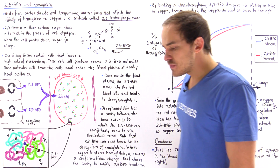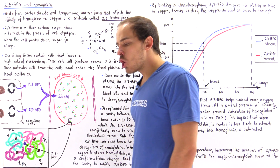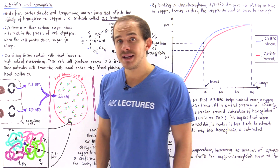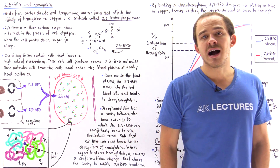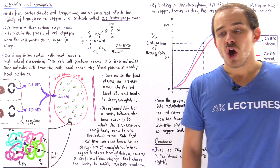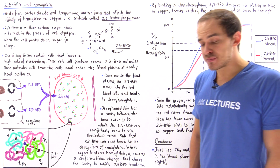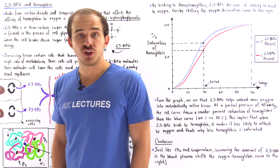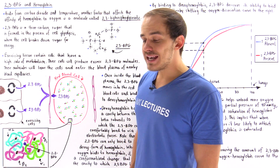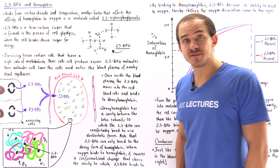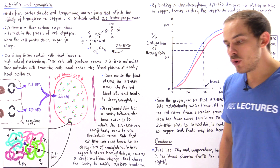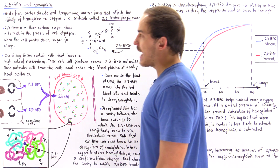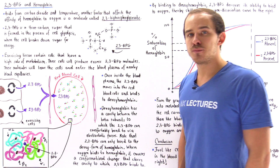2,3-BPG is a 3-carbon sugar that is an intermediate in the process of glycolysis. When we break down glucose into pyruvate molecules to form ATP in the process of cellular respiration, we essentially form 2,3-BPG as an intermediate.